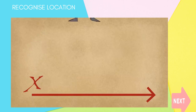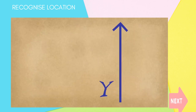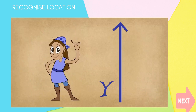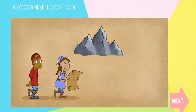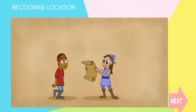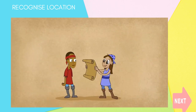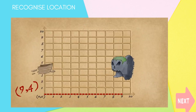On the x-axis, count to the right. On the y-axis, count from the ground. That's how a coordinate point is found. To plot the coordinates 9, 4: go right 9, up 4.